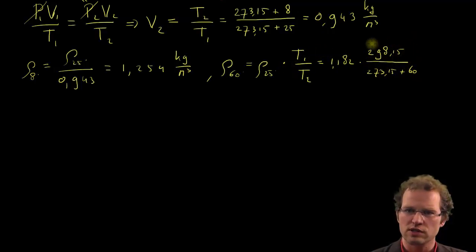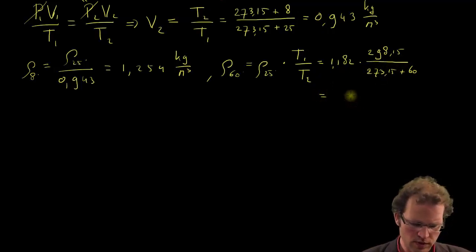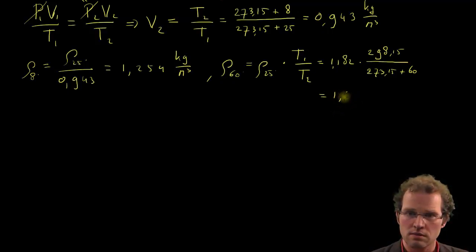So we started with 25 degrees centigrade, or 298 kelvin, and we divided by the 60 degrees centigrade, depending on kelvin. Okay, if we calculate this one, we come at a density of 1.058 kilograms per cubic meter.